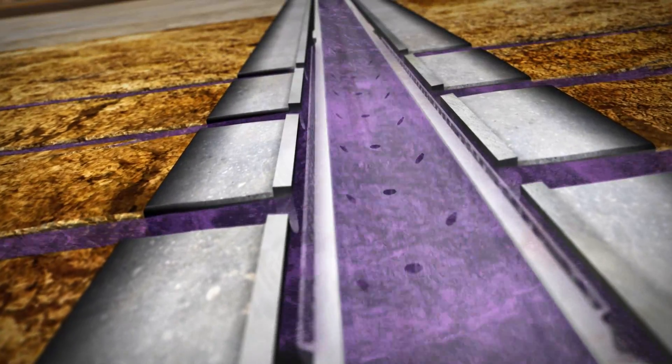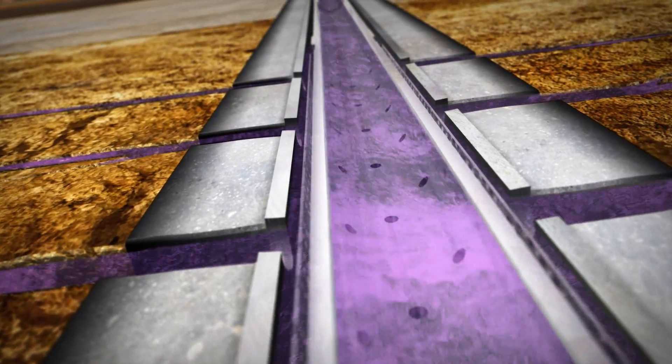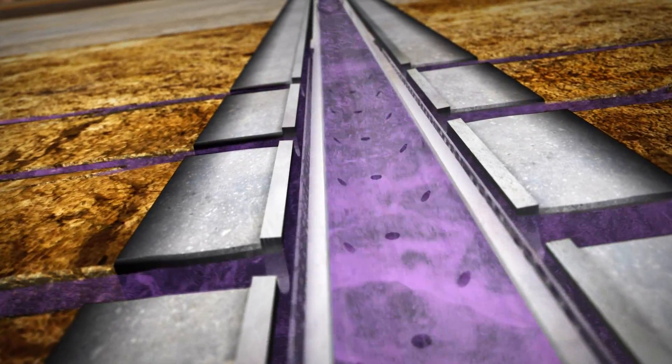In the produced water, the inhibitor provides protection against scale formation from the reservoir through the entire production string by disrupting the growth of scale crystals.